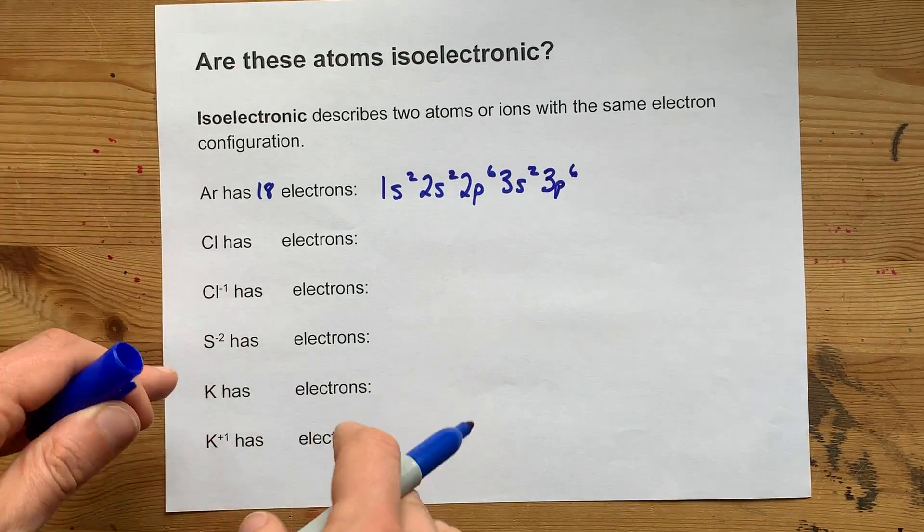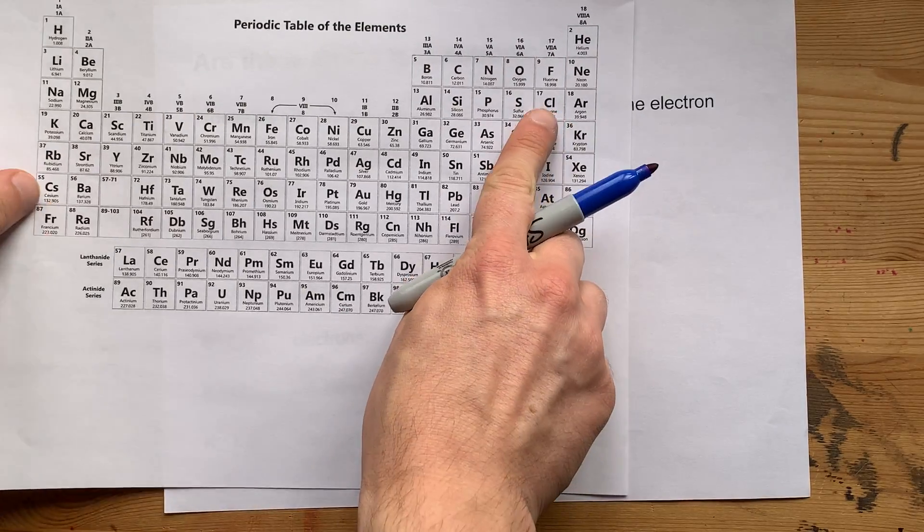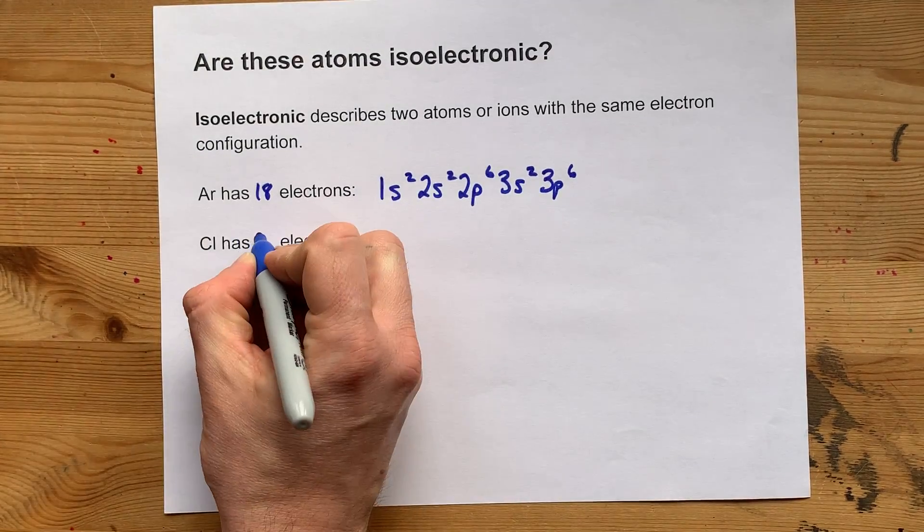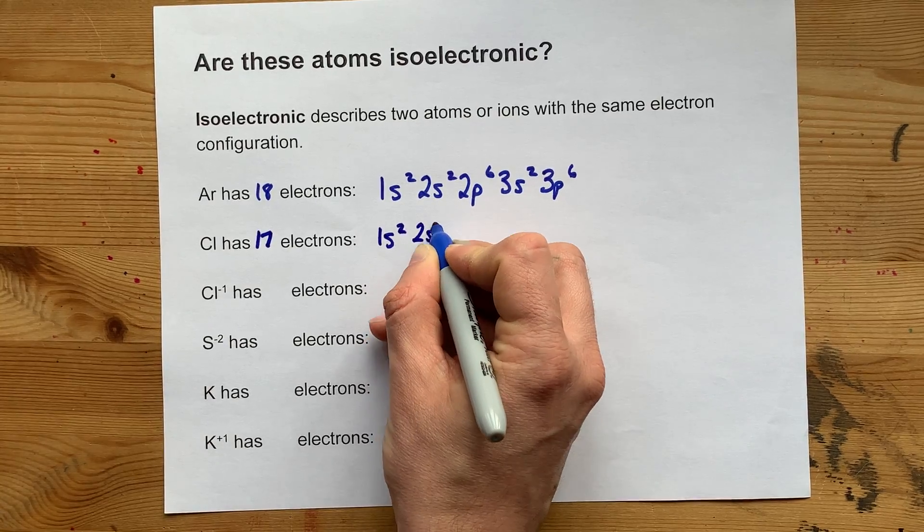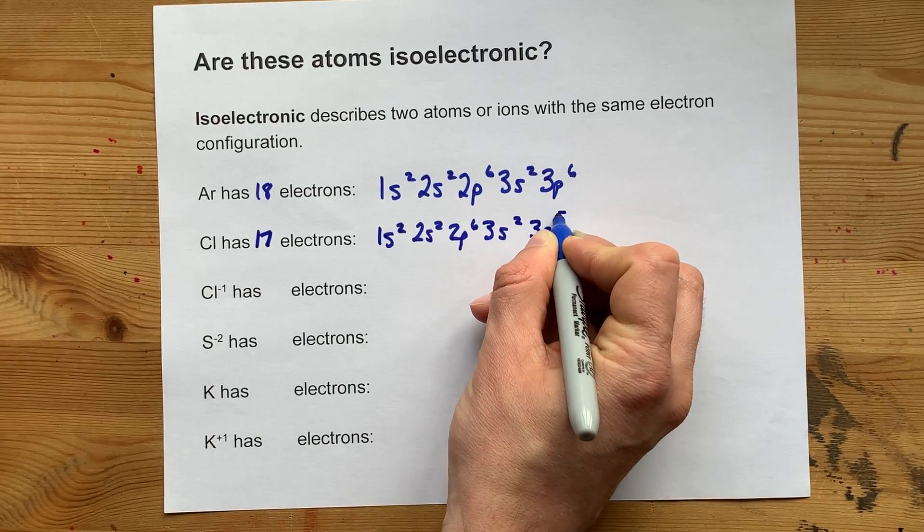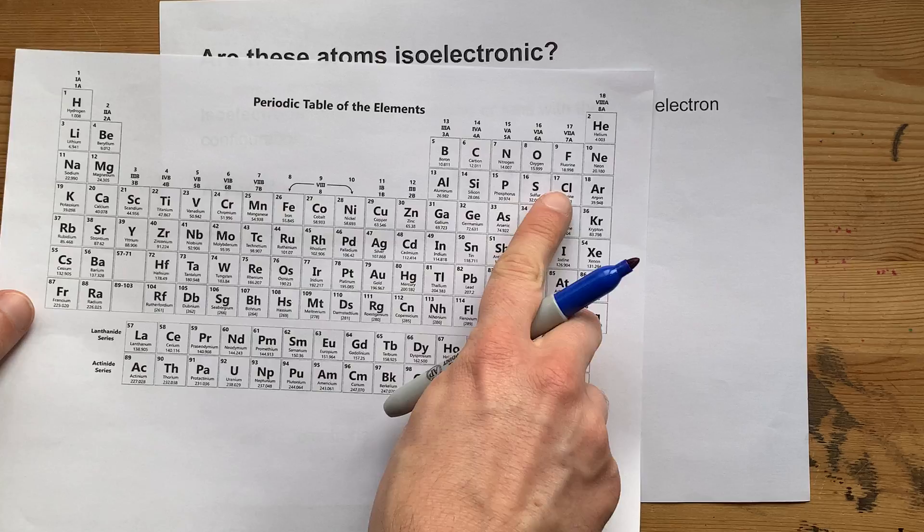Chlorine, on the other hand, itself brings 17 electrons. It is element number 17. Its electron configuration is 1s2, 2s2, 2p6, 3s2, 3p5, and I know that because it's one electron short of 18.